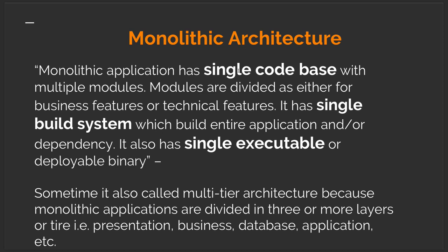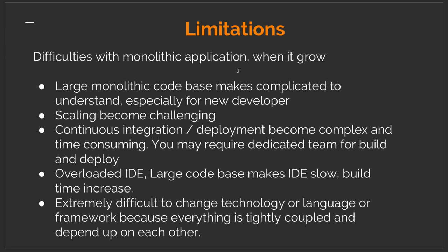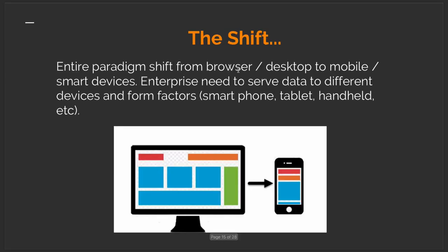Monolith architecture has a single codebase with multiple modules divided by business features. It has a single executable deployable — a WAR file, EAR file, or Node.js bootstrap file. A single file bootstraps the whole application, so if an unhandled exception or 500 error occurs, the server goes down and brings down the entire application — presentation, business logic, and database together. Scaling becomes challenging; understanding a large codebase is difficult for new developers, and there's always a fear when changing existing code.